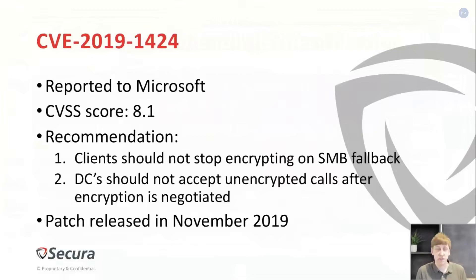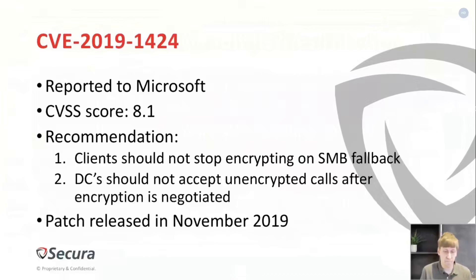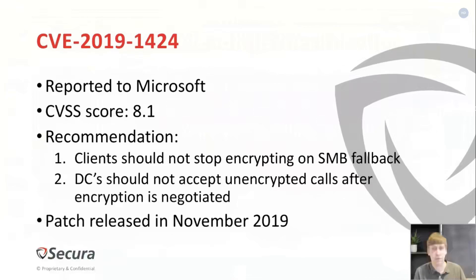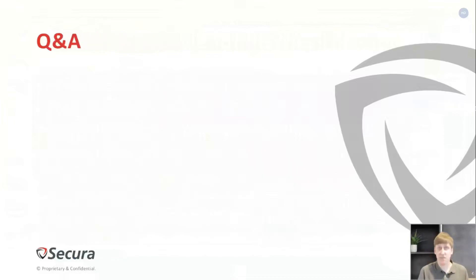I reported this bug to Microsoft. It received a CVSS score of 8.1. My recommendation was: first, this bug should be fixed so clients do not stop encrypting their messages when this fallback occurs. Besides that, the domain controller should also stop accepting unencrypted calls after encryption has been negotiated. This would mean that even if a client is unpatched, a patched domain controller would stop the attack — because it would not respond to unencrypted messages or provide the authenticator an attacker needs. A patch for this was released during Patch Tuesday in 2019.